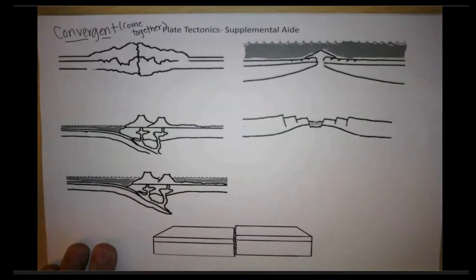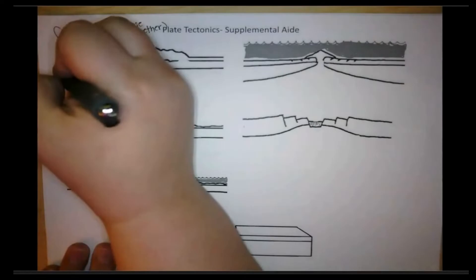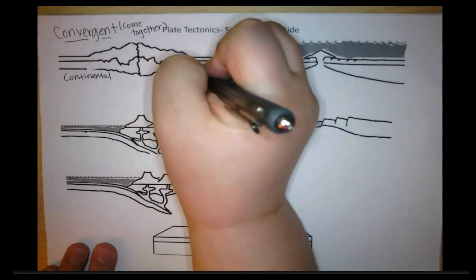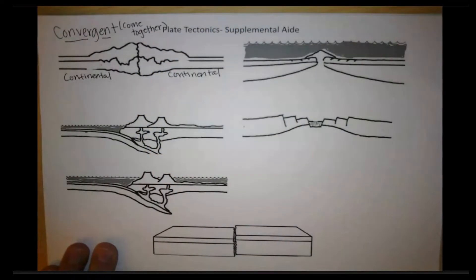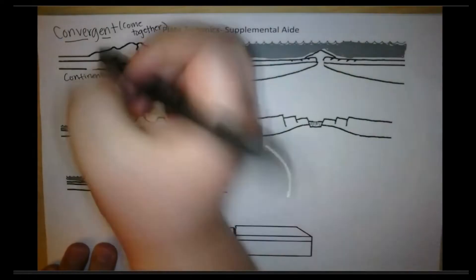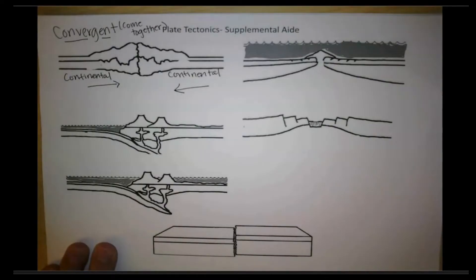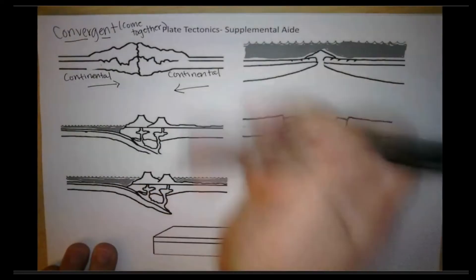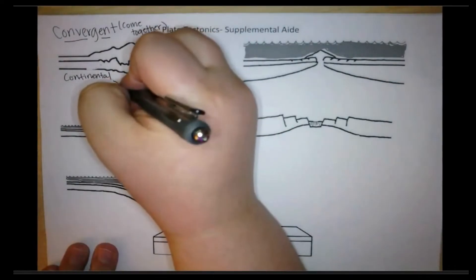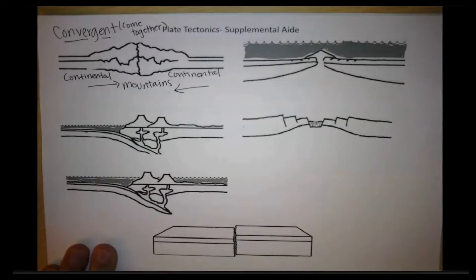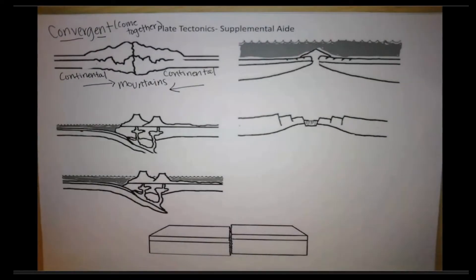Our first one, we're dealing with two continental plates, meaning two plates that are land. So right here, we're going to write continental and continental. We're going to draw those arrows coming together, pushing inward. Because these are two continental plates, neither of them is more dense than the other, so they don't dive down underneath each other. Instead, they push each other up, so what we get on land is mountains forming. We'll also get earthquakes that form in these places.